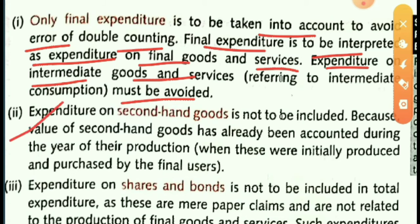Second precaution: expenditure on second-hand goods must not be included, because the value of second-hand goods has already been accounted for during the year of their production. Many people purchase second-hand bikes or cars, but their value should not be added again.